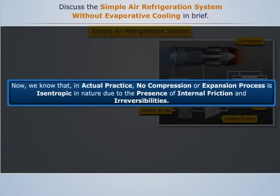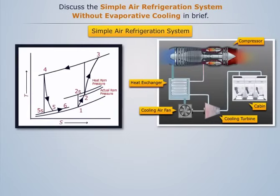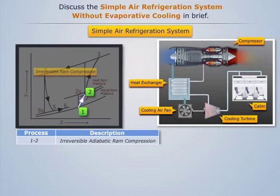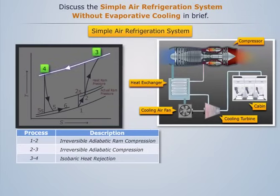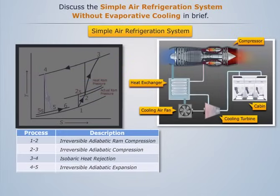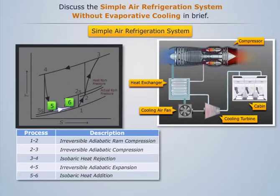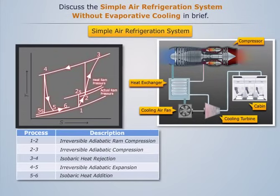In actual practice, no compression or expansion process is isentropic in nature due to the presence of internal friction and irreversibilities. Therefore, the actual TS diagram shows that process 1-2 represents the actual irreversible adiabatic compression taking place in the main compressor. Process 3-4 represents the isobaric heat rejection in the heat exchanger. Process 4-5 represents the actual irreversible adiabatic expansion in the cooling turbine. Process 5-6 represents the isobaric heat absorption in the cabin. Therefore, the cycle 1-2-3-4-5-6 constitutes the actual simple air refrigeration system without evaporative cooling.